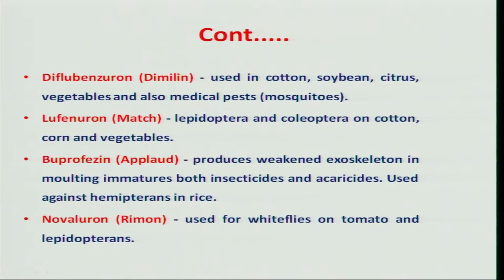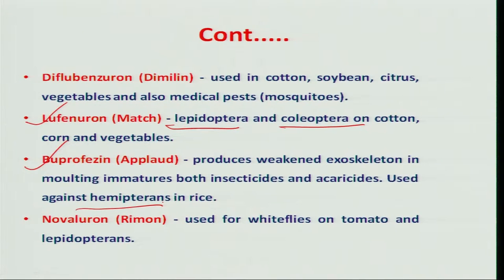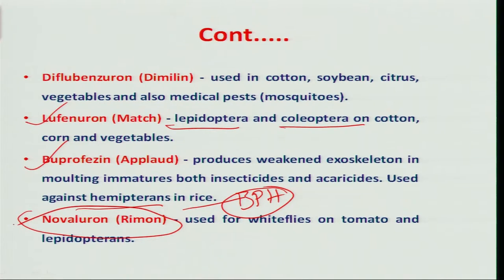Other insect growth regulators available in India include lufenuron, which is very effective against lepidopteran pests and to some extent coleopteran groups. Then buprofezin, another IGR effective against sucking insect pests and some hemipterans involved in damage in the rice ecosystem. Novaluron is also commercially available and effective against lepidopteran insects and to some extent whitefly.